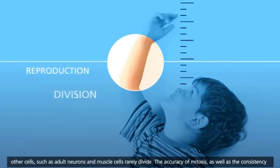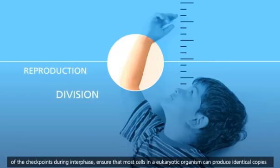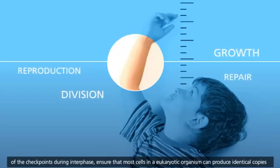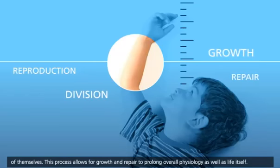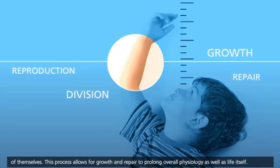The accuracy of mitosis, as well as the consistency of the checkpoints during interphase, ensure that most cells in a eukaryotic organism can produce identical copies of themselves. This process allows for growth and repair to prolong overall physiology as well as life itself.